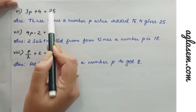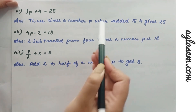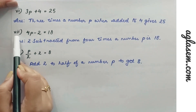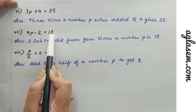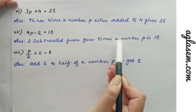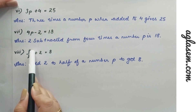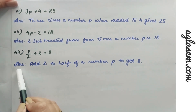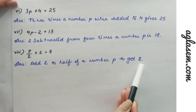Sixth equation: 3p + 4 = 25, the statement is: 3 times a number p when added to 4 gives 25. Seventh: 4p − 2 = 18, the statement is: 2 subtracted from 4 times a number p is 18. Eighth: p/2 + 2 = 8, the statement is: add 2 to half of a number p to get 8.